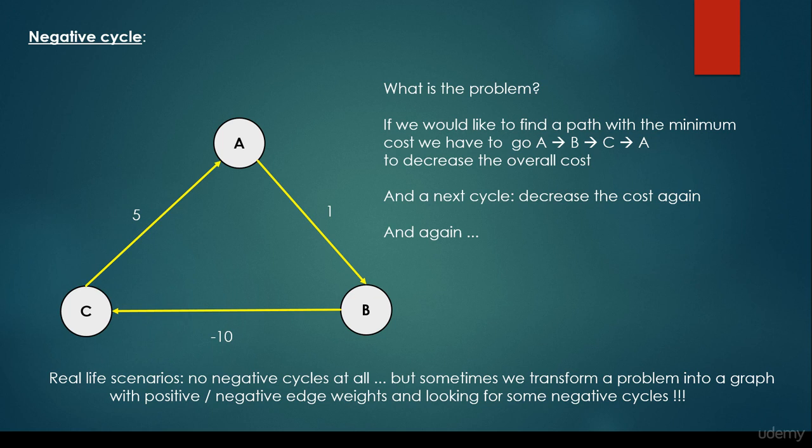but sometimes we transform a problem into a graph with positive and negative edge weights and looking for some negative cycles. For example, if we are dealing with stock market or Forex related data, we are able to find the so-called arbitrage situations and make riskless money. And we are looking for these negative cycles, so in that situation it's crucial to find these negative cycles.